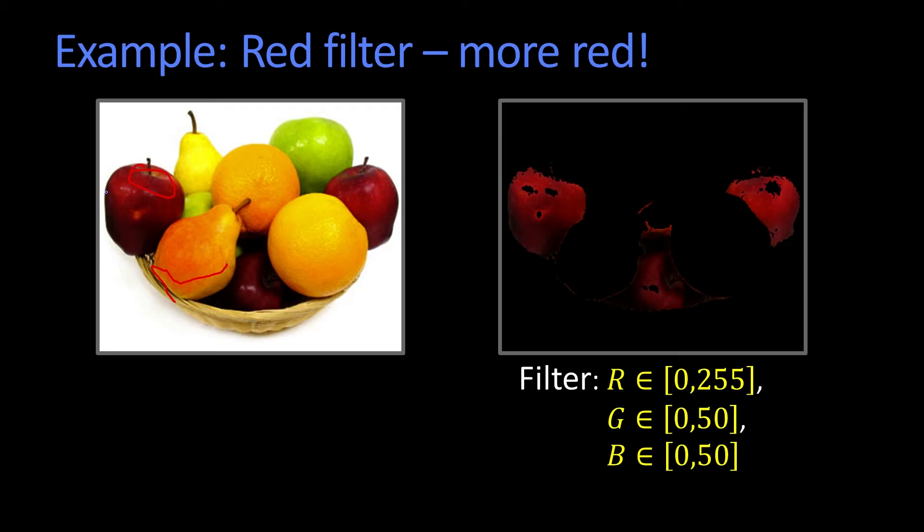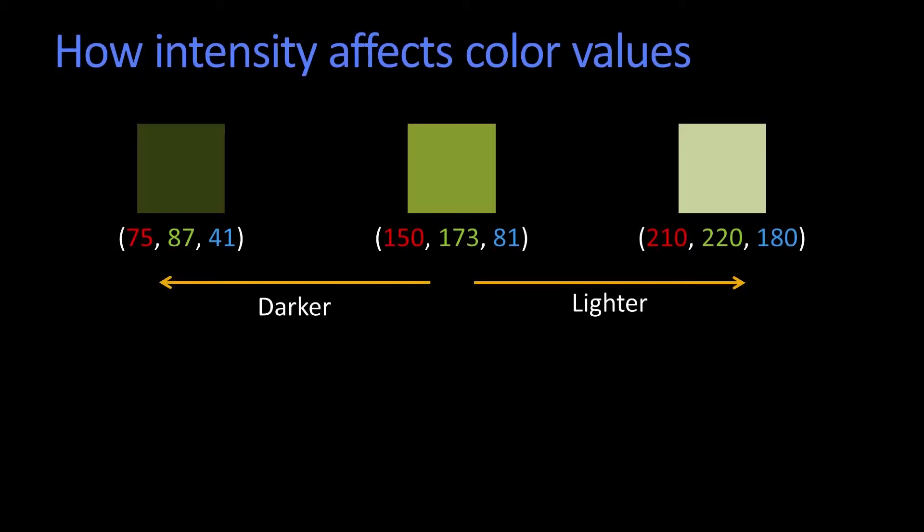And the reason for this, and we've seen this before, is that here we're plotting three different shades of this, three different intensities of sort of the same green. In the RGB space, right?